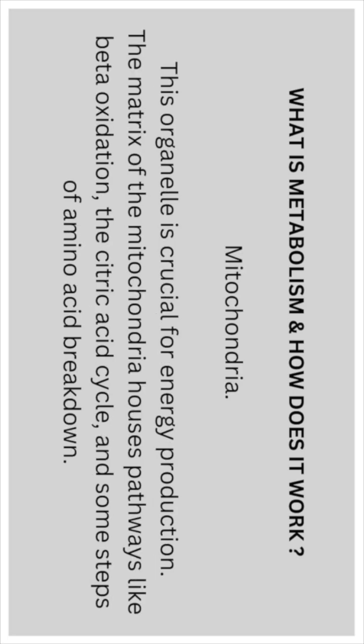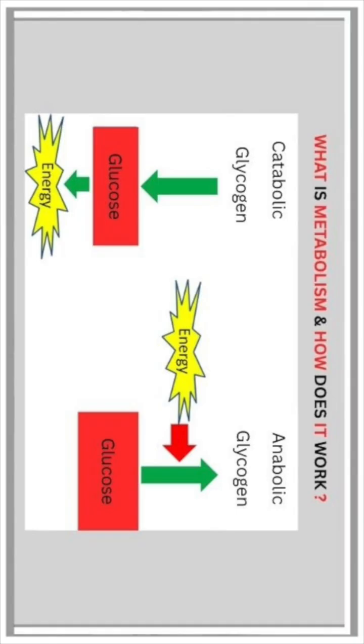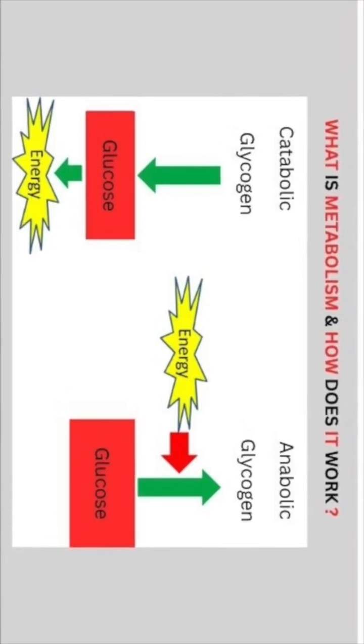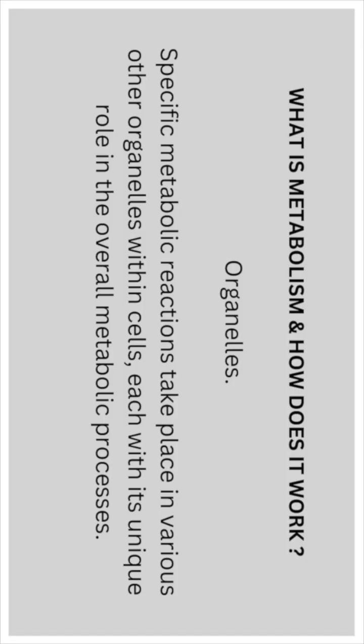Mitochondria: this organelle is crucial for energy production. The matrix of the mitochondria houses pathways like beta-oxidation, the citric acid cycle, and some steps of amino acid breakdown. Specific metabolic reactions also take place in various other organelles within cells, each with its own unique role in the overall metabolic process.